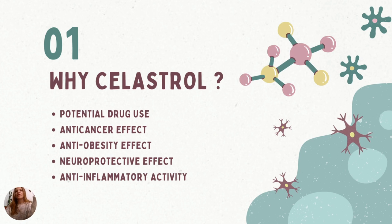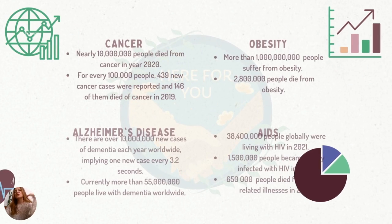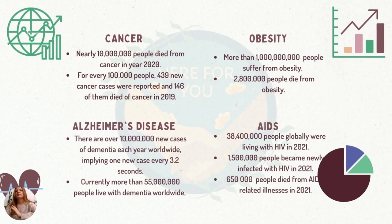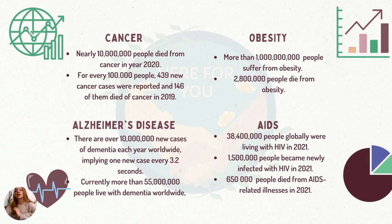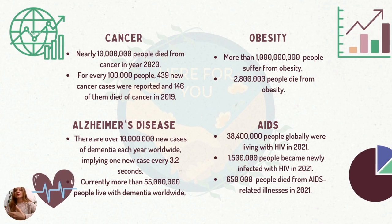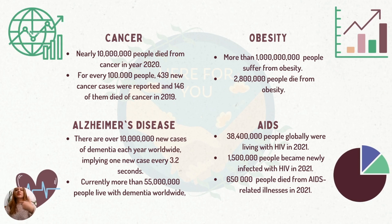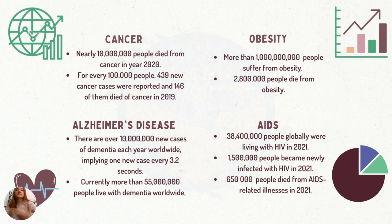Acting on the liver, adipose tissue, and kidney, Celastrol reduces insulin resistance, improves abnormal lipid metabolism, and oxidative stress. Each year, billions of people suffer from diseases such as cancer, obesity, and Alzheimer's disease, and millions of people die from those diseases.